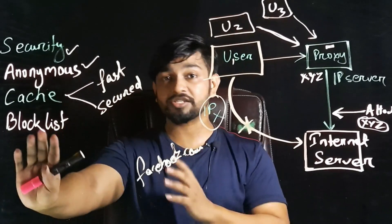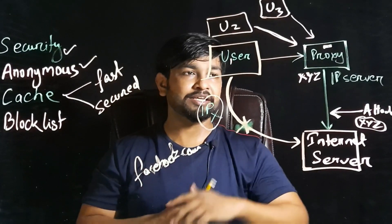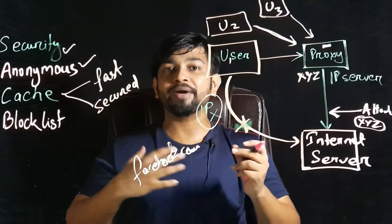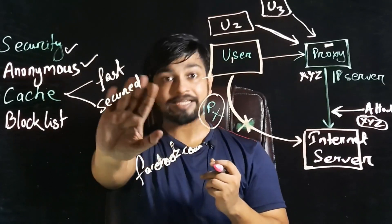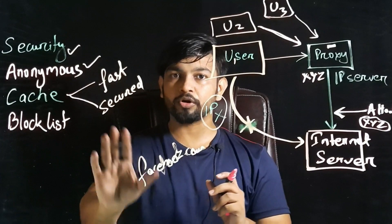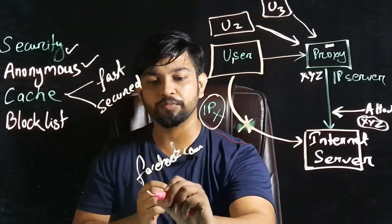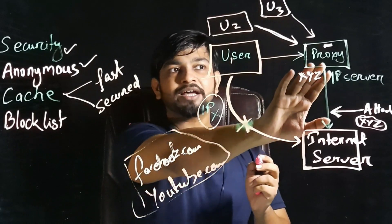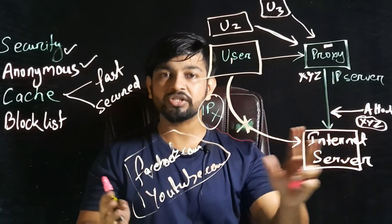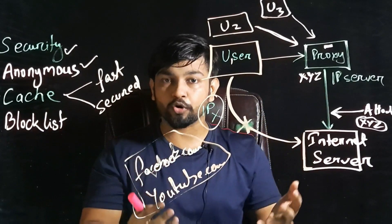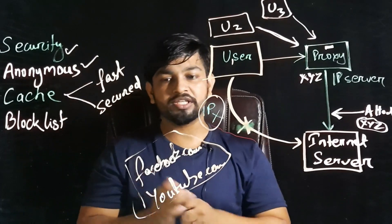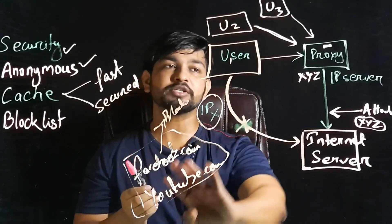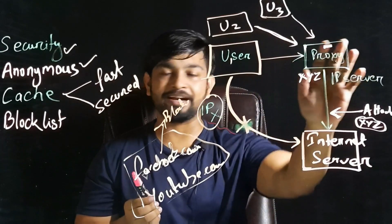The final use case is the block list and allow list. In the proxy server configuration, you can define which websites employees are allowed to visit. For example, if your company's nature of work requires it, you can allow facebook.com and YouTube in the allow list. Alternatively, if you put a site in the block list, users will be denied access even if they type the URL — the request will be blocked at the proxy level.